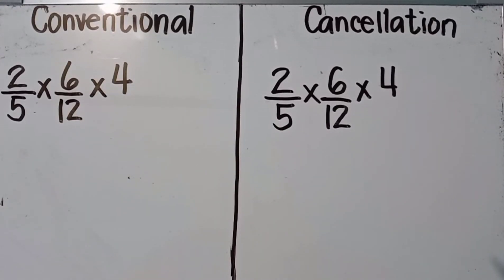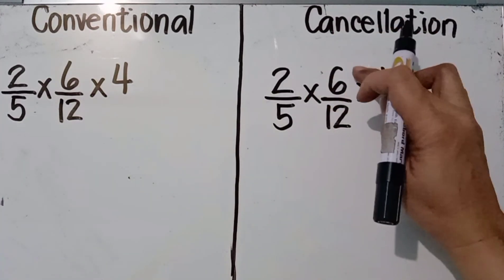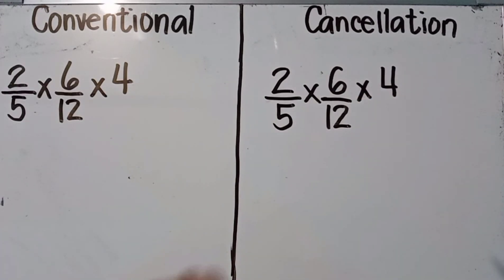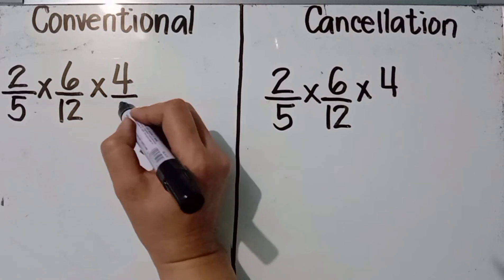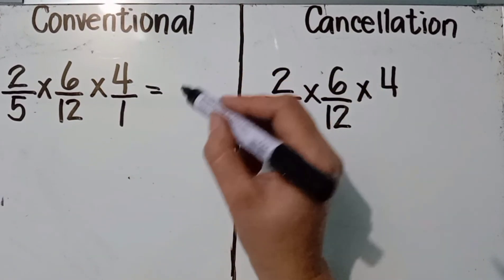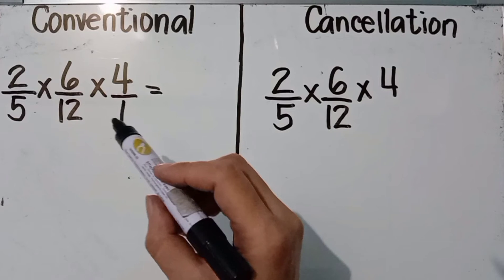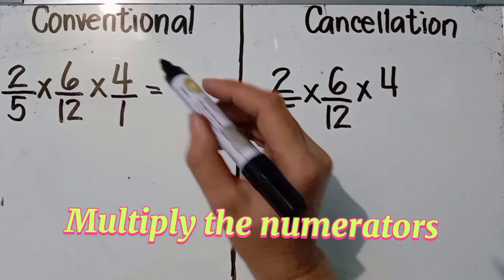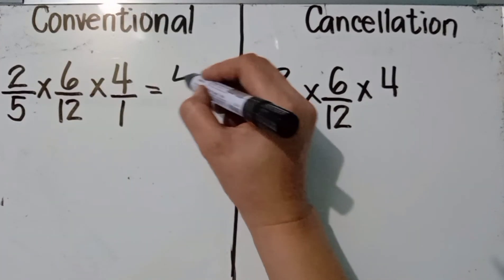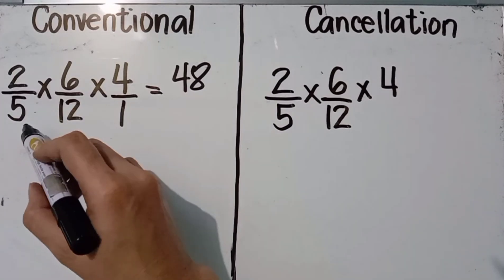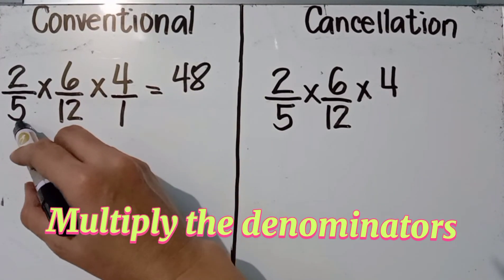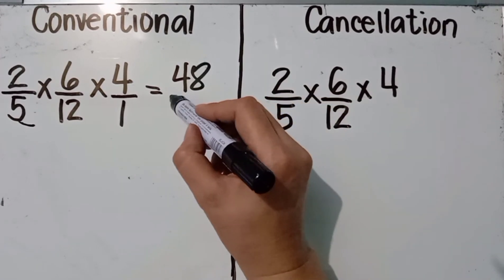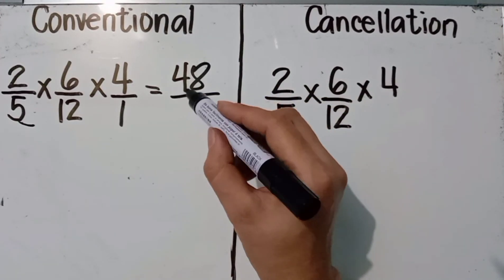Last example: two fifths times six twelfths times four, or two over five times six over twelve times four over one. Using the conventional method, multiply all the numerators: two times six is twelve, and twelve times four equals 48. Then multiply the denominators: five times twelve times one equals 60.